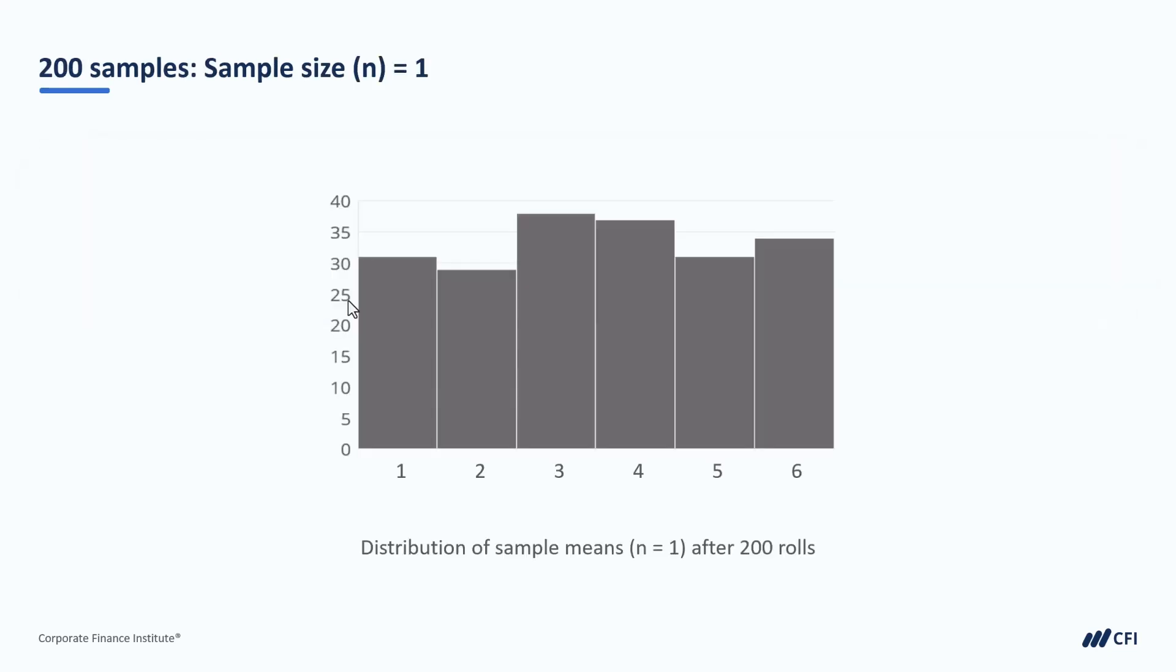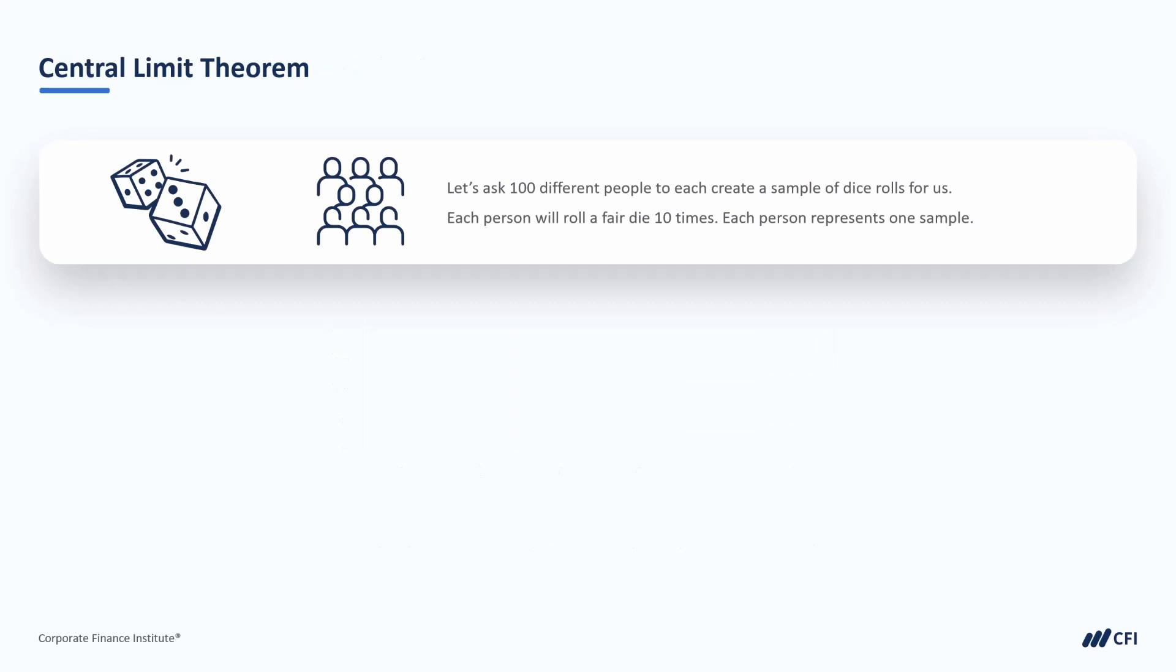Another key concept of taking a sample from a population is the central limit theorem. To illustrate this, we can go back to our dice rolling example. Let's ask 100 different people to each create a sample of dice rolls for us. We know that the true distribution of a fair dice is uniform. Each result from 1 to 6 is equally as likely. So for this test, each person will roll a fair dice 10 times. Each person represents one sample. Person 1 rolls their dice 10 times and gets an average value of 4. Person 2 rolls their dice 10 times and gets an average value of 2. And each of the 100 people do this, generating an average value of their 10 rolls.